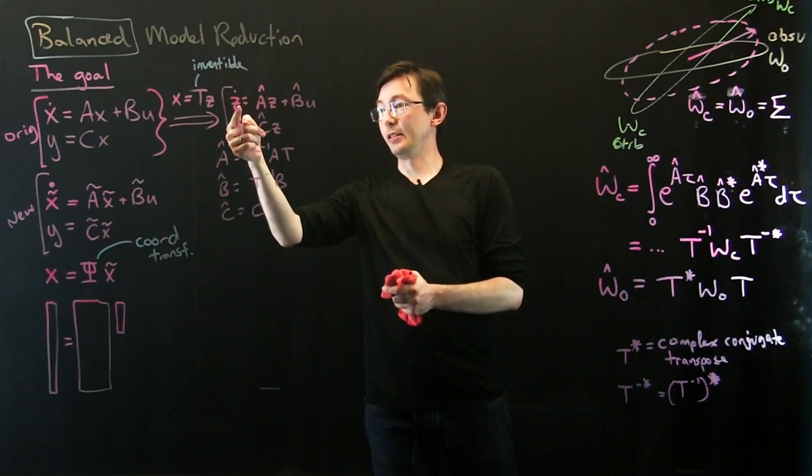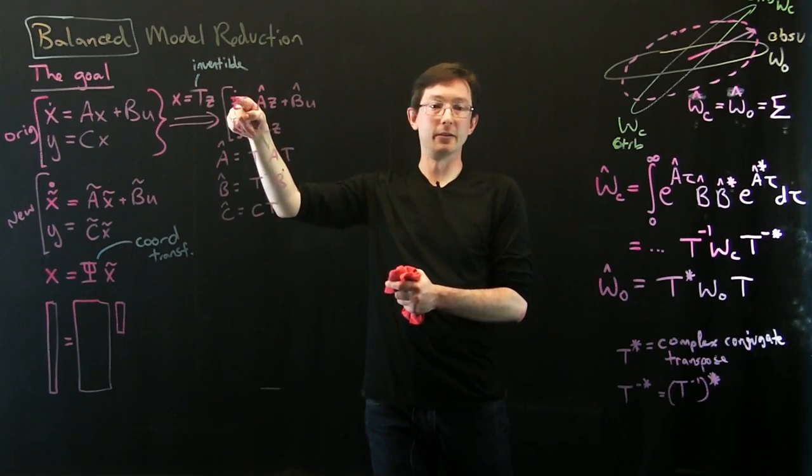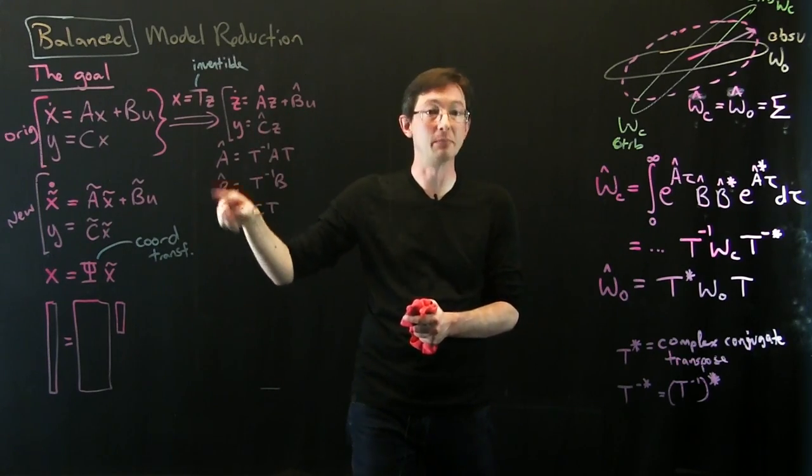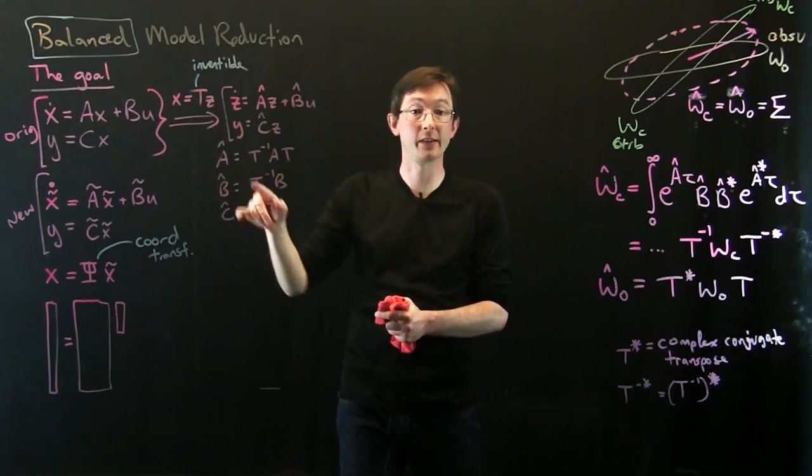They basically turn into, instead of A, B, and C, we have these A-hat, B-hat, and C-hats, which are simple functions of my original dynamics here.